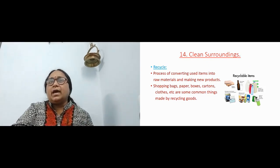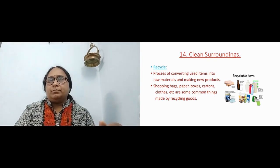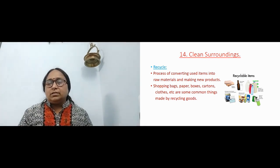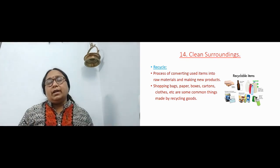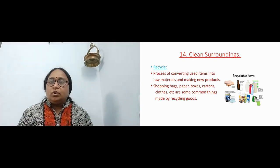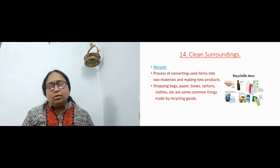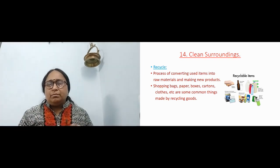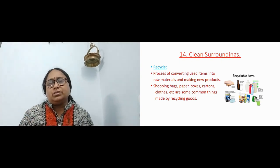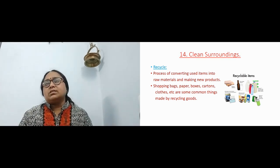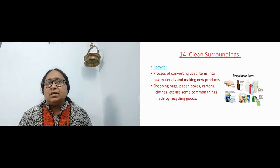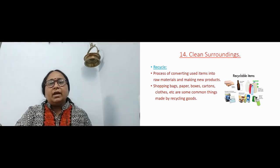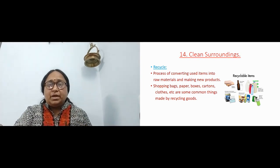The next one is recycling — the process of converting used items into raw materials and making a new product. As you can see in the picture, papers and cardboards are used as raw material and then again produce another bunch of papers. You can keep on using it; the quality may decrease but still you can use it. Even plastic — good quality plastic — they recycle it, though the quality may be a little less. Shopping bags, papers, boxes, cartons, clothes etc. are some of the common things made from recycled goods.